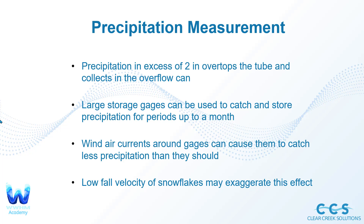Precipitation in excess of two inches overtops the tube and collects in an overflow can for additional measurement. Large storage gauges can catch and store precipitation for periods up to a month. Wind and air currents around gauges can cause them to catch less precipitation than they should — a common problem is that blowing wind may produce wildly different results between different gauges, introducing measurement error.